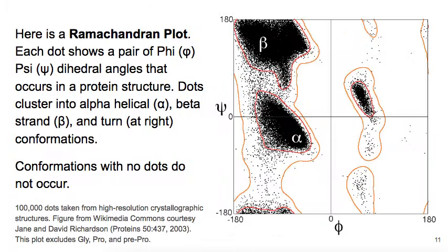Here is a Ramachandran plot. Along the bottom, we have the phi angles from 0 to plus 180 and 0 to minus 180. And along this axis, we have the psi angles from 0 to minus 180 and clockwise from 0 to plus 180. Inside the plot, we have 100,000 tiny dots.